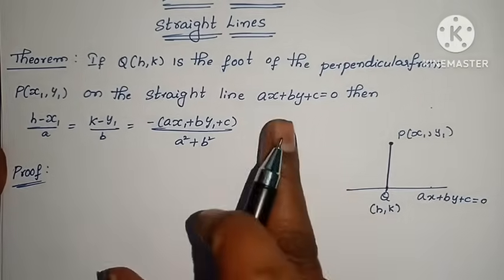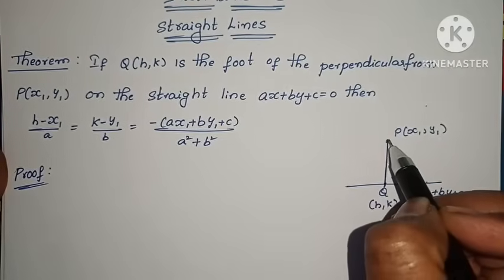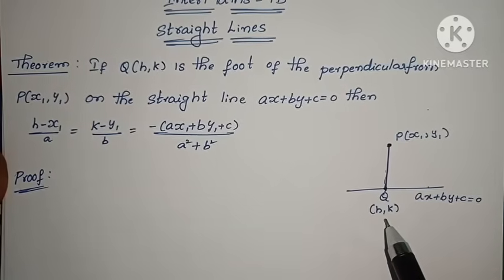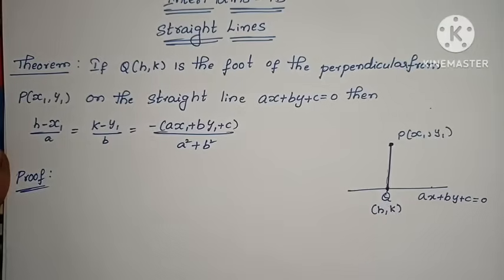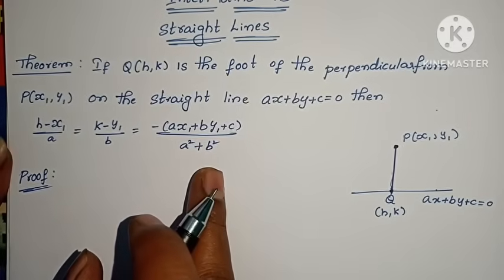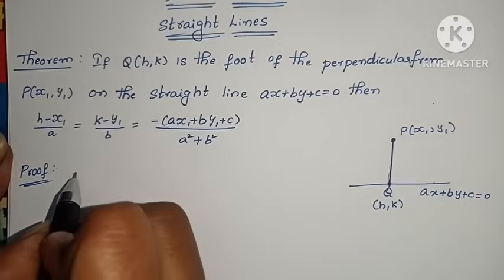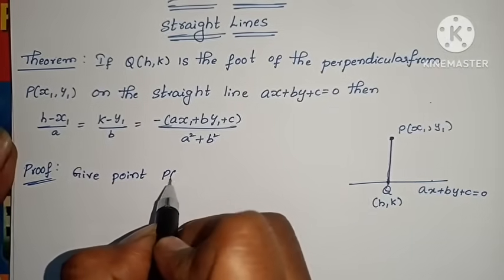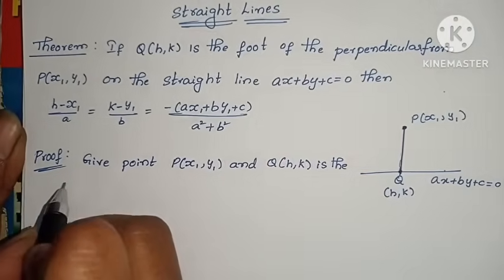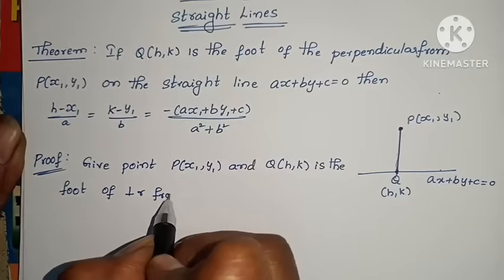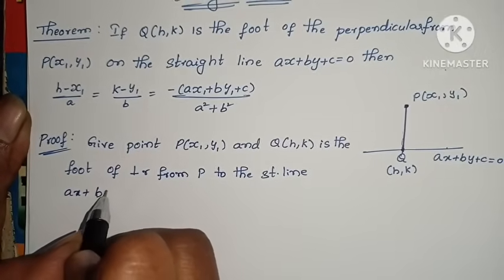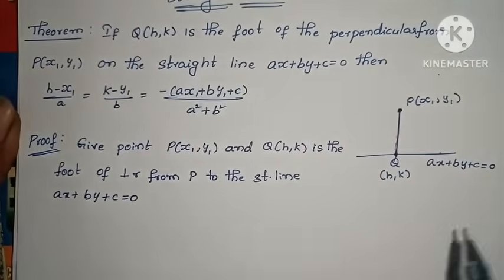We will prove it. There is a straight line — its equation is ax plus by plus c equals to 0. There is a point P(x₁, y₁). From P, a perpendicular is drawn to the straight line. The foot of that perpendicular on the straight line is the point Q(h, k). This point Q is called the foot of the perpendicular. Now, given this setup, the condition is (h minus x₁) by a equals to (k minus y₁) by b equals to minus of (ax₁ plus by₁ plus c) by (a² plus b²).